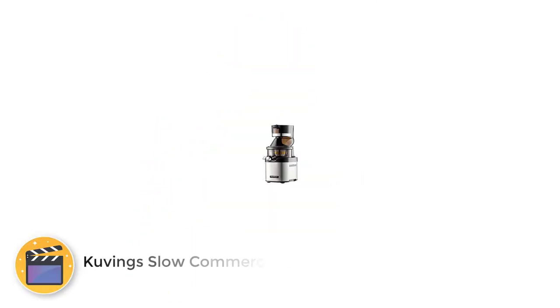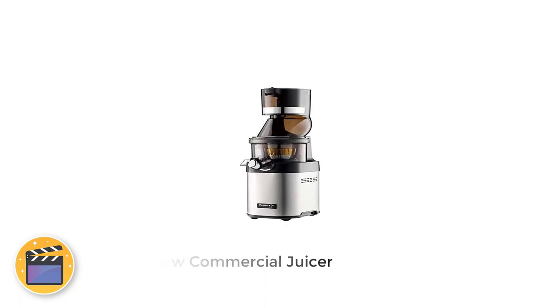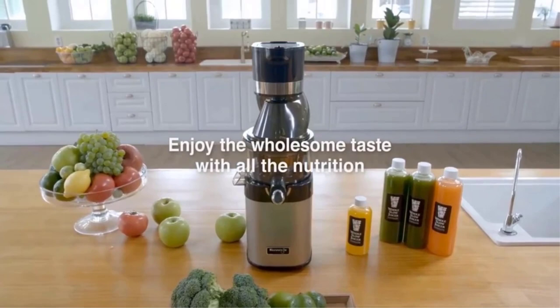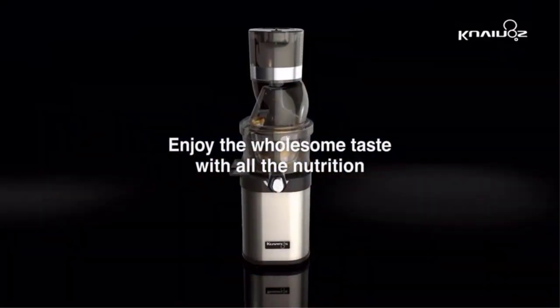Number 3. Kuving Slow Commercial Juicer. The Kuving's Whole Slow Juicer is a revolutionary new vertical masticating juicer that extracts more juice and nutrients than any other style of juicers.